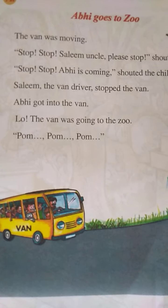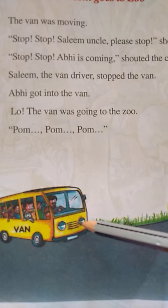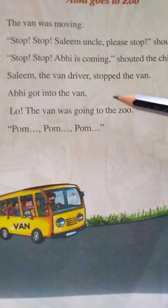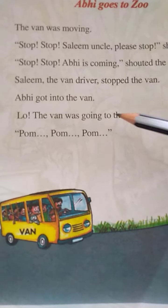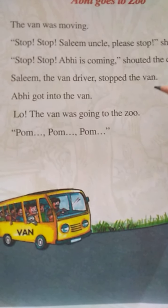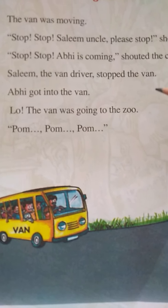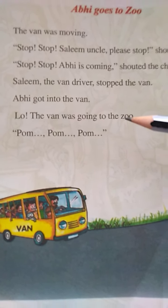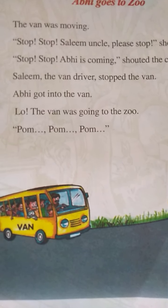Salim, the driver of the van, stopped the van. Abhi got into the van when it stopped. The van was then going to the zoo. All the children are going to the zoo. The next sound is 'Pom pom pom' — it is the horn of the van. All the children were enjoying in the bus, very happy to go and see all the different types of animals in the zoo.